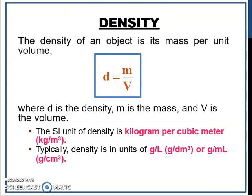Okay. Next, density. The density of an object is its mass per unit volume. Density equals mass over volume. The SI unit of density is kilogram per meter cube. And typically density units are gram per liter or gram per milliliter. So density has various units. It could be kilogram per meter cube, gram per liter, gram per milliliter, and so on.